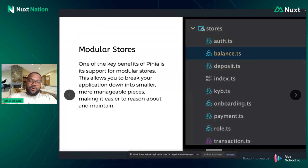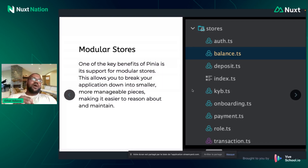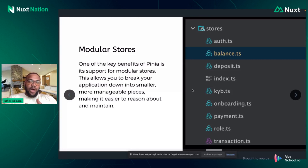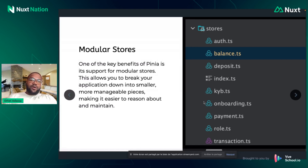Nuxt 3 is very easy to use and offers a lot of benefits. One key benefit is that you can break your stores into modular pieces. If you have a big app with many features, you can have a store for authentication, a store for payments, a store to handle cart management, and so on. It's up to you how you want to separate things — it's a very interesting feature that Pinia gives us.